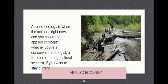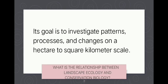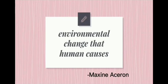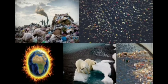What is the relationship between landscape ecology and conservation biology? Its goal is to investigate patterns, processes, and changes at hectare-to-square-kilometer scales. The emphasis on structure and dynamics of ecosystems within a landscape has significant conservation biology implications. We have become reliant on luxuries such as cars, houses, and cell phones, but our adoration for manufactured goods has a profound impact on the environment.